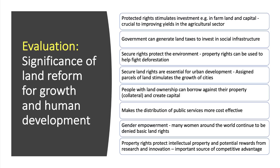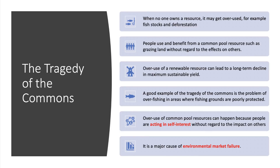Let me turn to a really significant microeconomic issue: it's called the tragedy of the commons, and it's one of the best examples you can find of systemic environmental market failure. The tragedy of the commons happens when nobody owns a resource — we call these common pool resources: grazing land, fish stocks, forestry, and other aspects. When no one owns a resource, it can get overused. People use and benefit from a common pool resource such as grazing land; their individual benefit minus cost is high, and what's true for one person is true for all, so people overuse the resource.